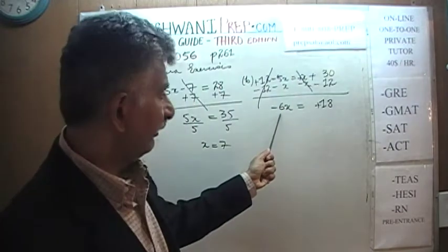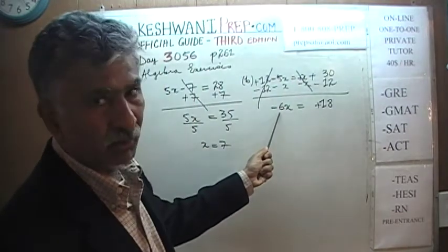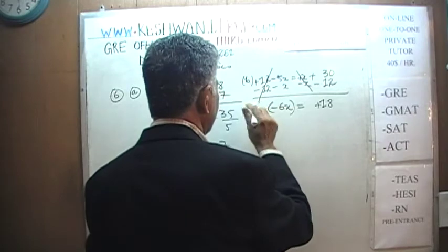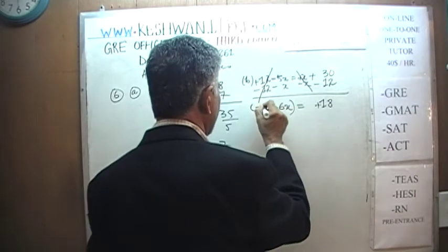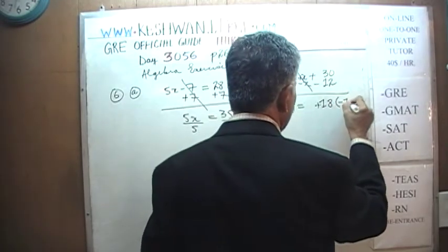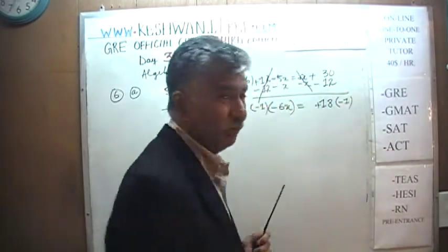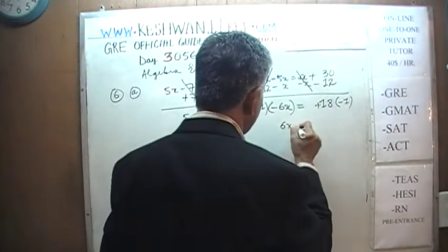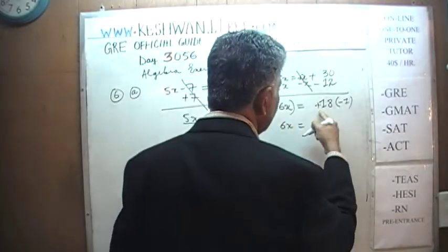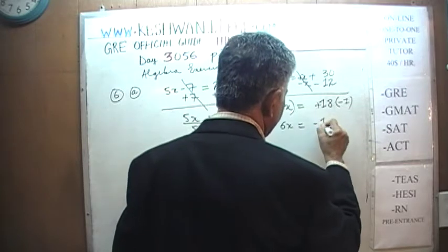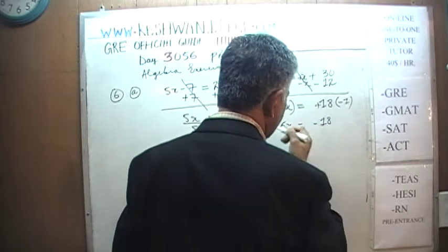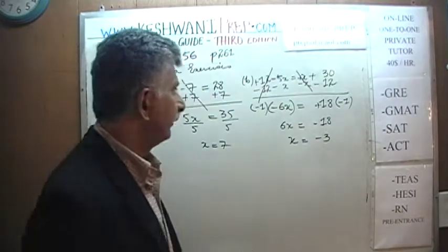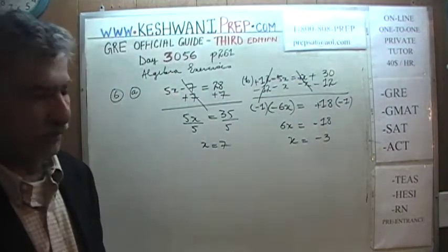To eliminate the negative sign, we multiply both sides by negative 1. Negative times negative is positive, so we get 6x equals negative 18. Divide both sides by 6 and x equals negative 3.